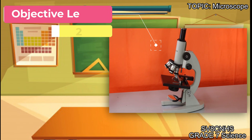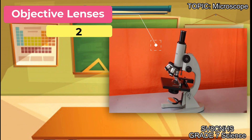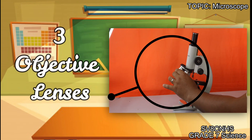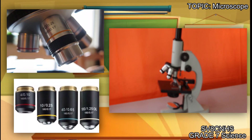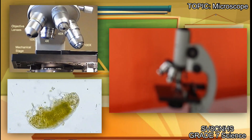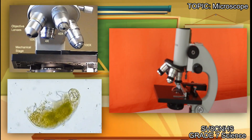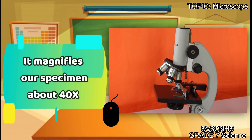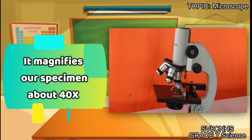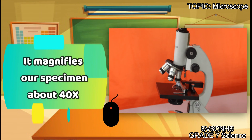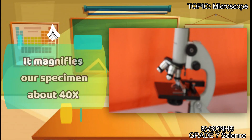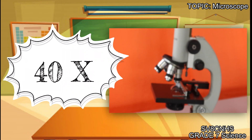Next is what we call the objective lenses. Here are our objective lenses. As you can see, we have three objective lenses, because it depends on how large the image formed on our specimen will be. The function of our objective lenses is that it magnifies our specimen about 40 times compared to its original size.